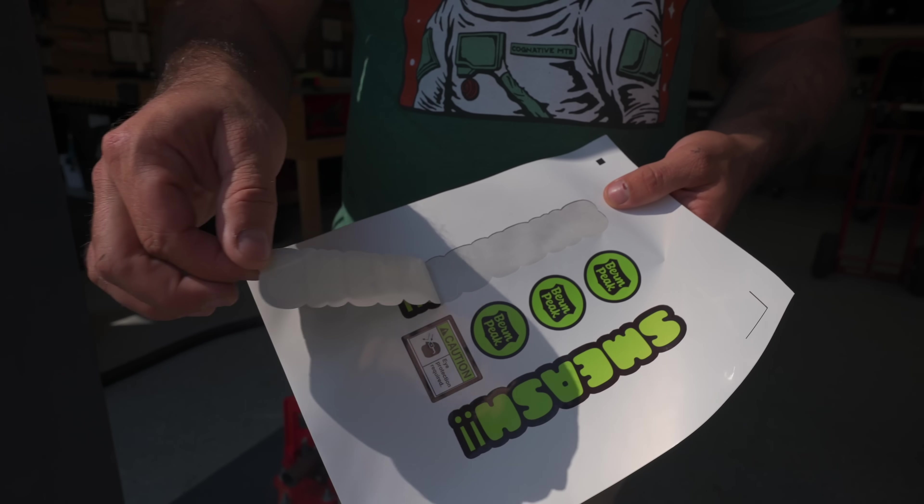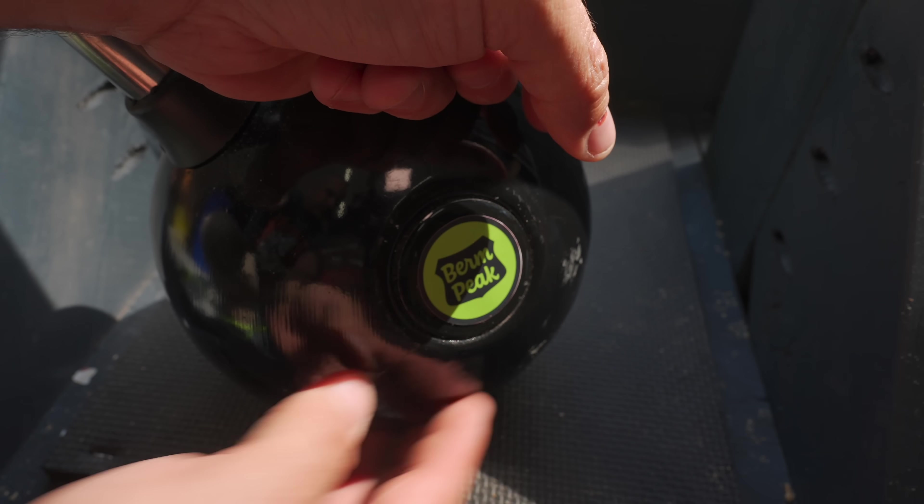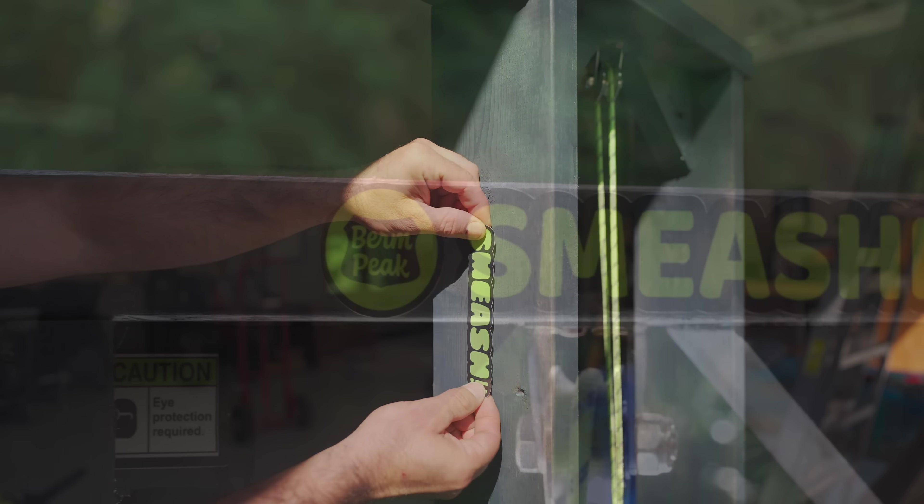So this machine just needs some finishing touches. It needs branding, warning labels. And because it is for smashing stuff, it's called the Berm Peak Smasher.